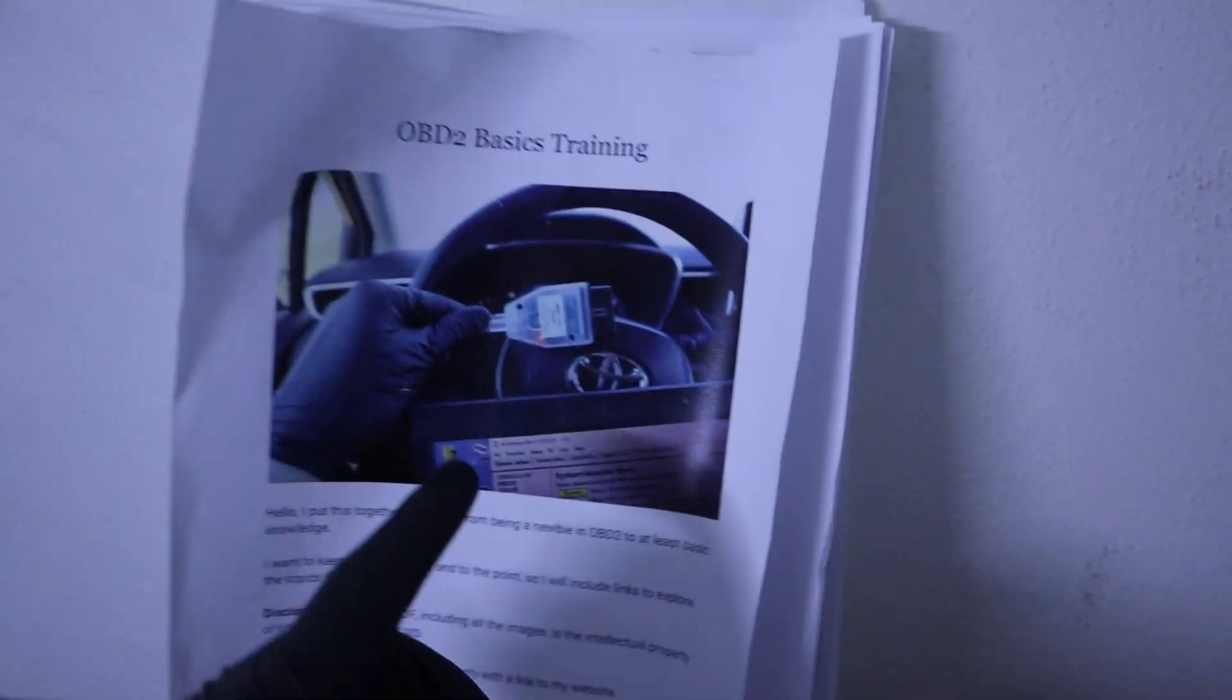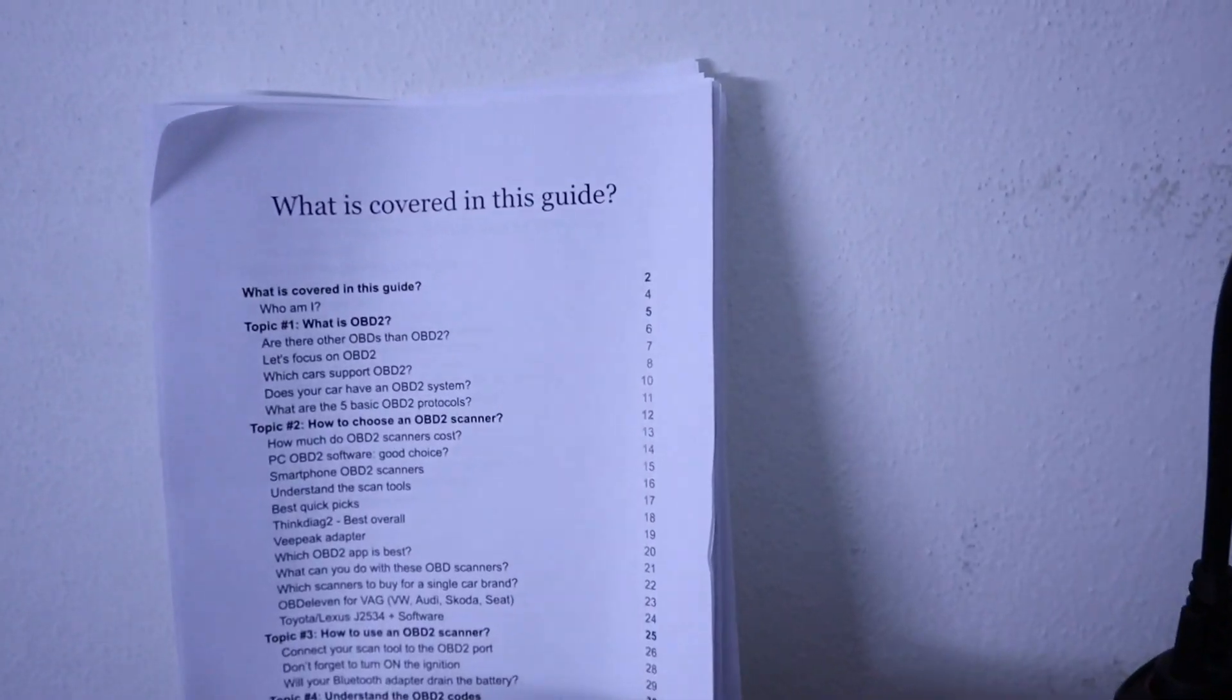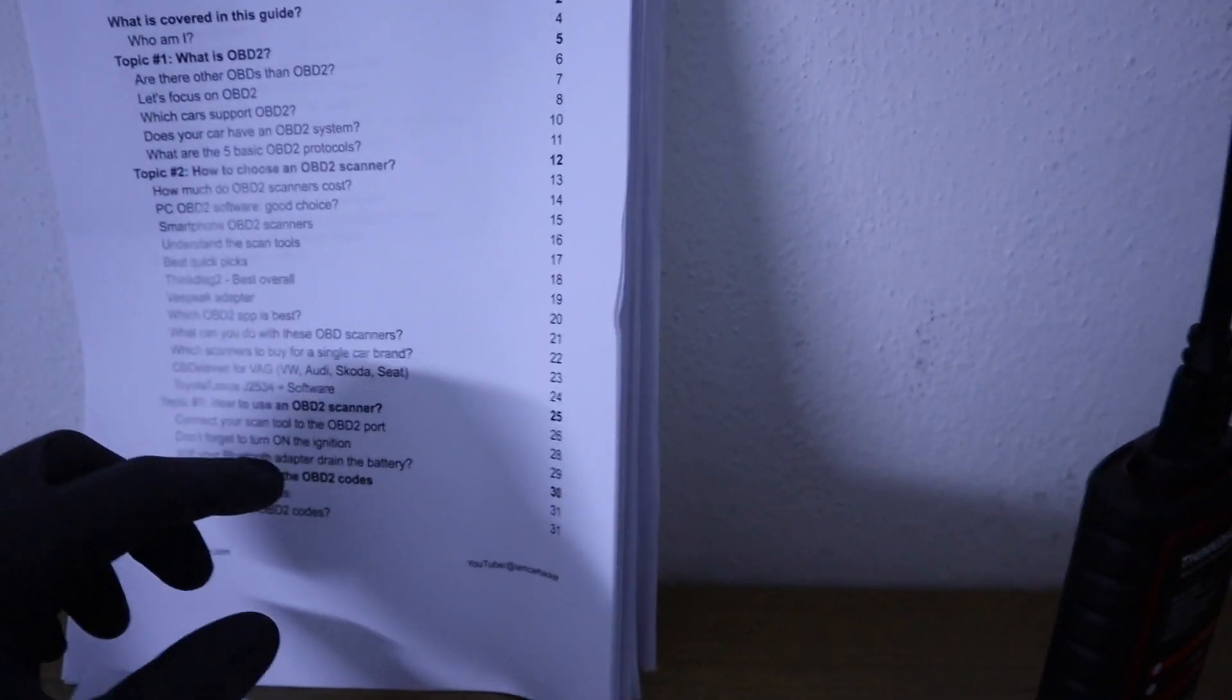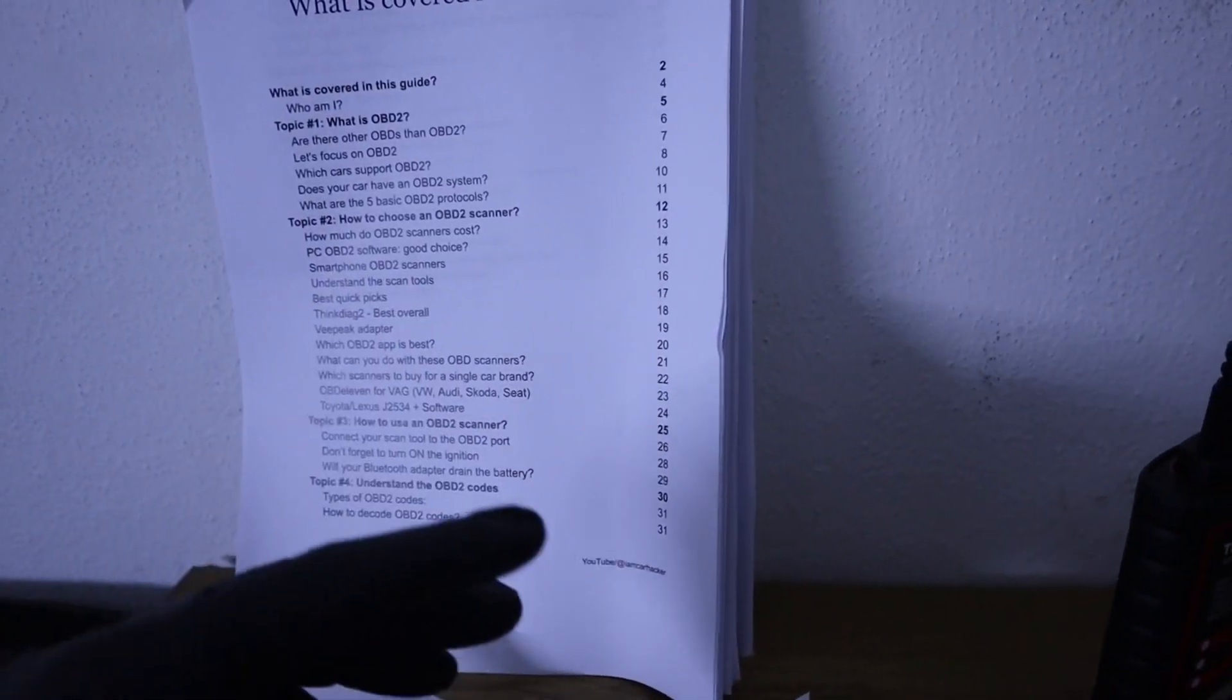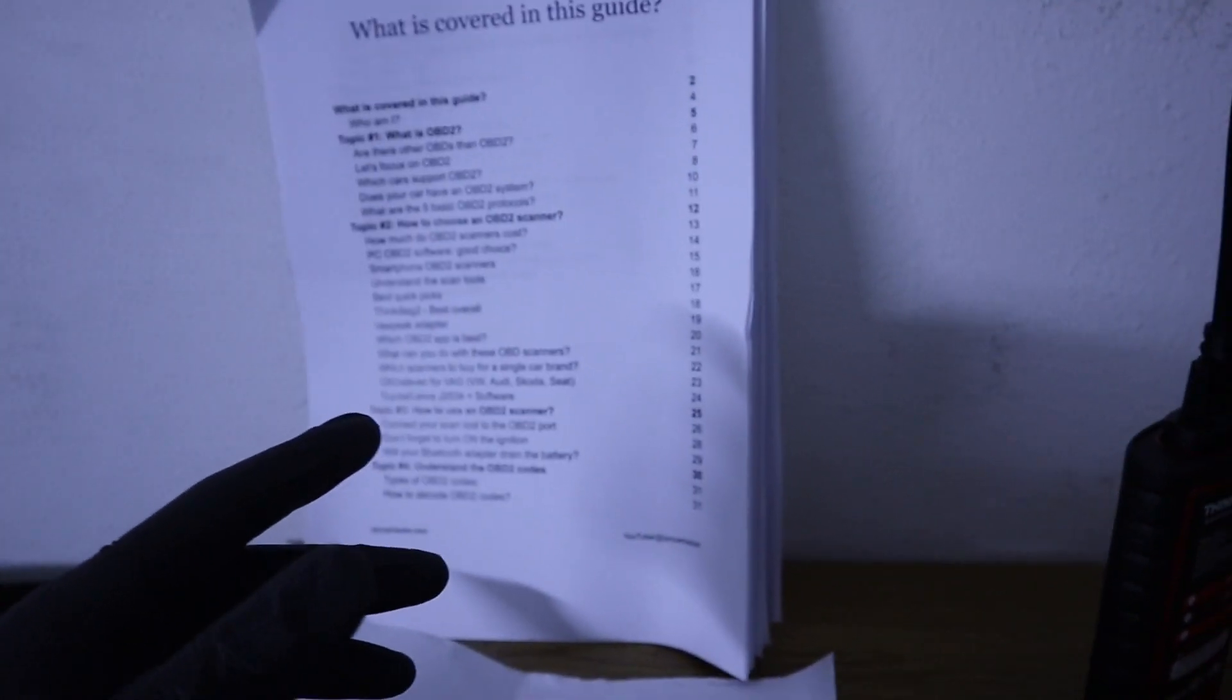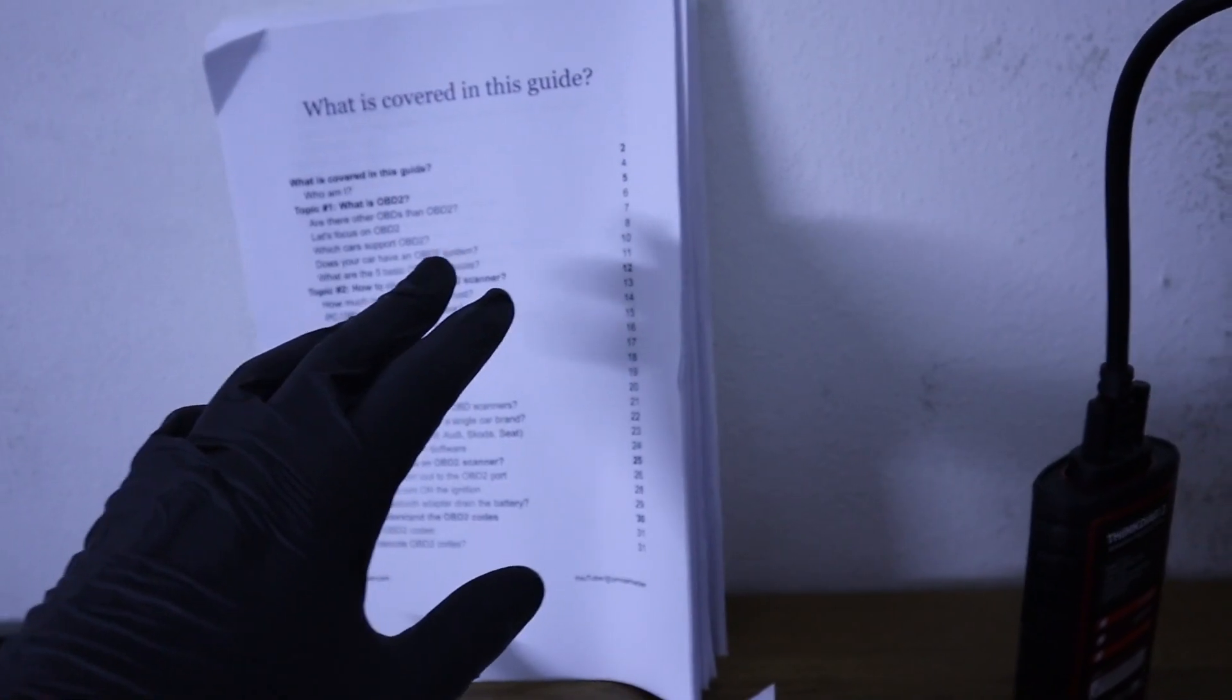And before I show you the adapters, this is free PDF you can download, which will take you through OBD2 basics. What is OBD, how to choose OBD scanner, how to use OBD scanner. It explains fault codes, it explains how you can detect real mileage with OBD2 scanner, how you can do ECU coding and it is completely for free.